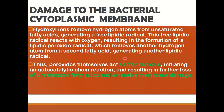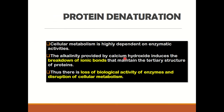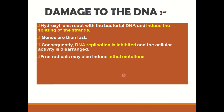Next is protein denaturation. The alkaline atmosphere provided by calcium hydroxide induces the breakdown of the ionic bonds that maintain the tertiary structure of the protein. Cellular metabolism is highly dependent on enzymatic activities, and because of this breakdown and damage to the rearrangement of the protein structure, there is loss of biological activity of enzymes and consequently disruption of cellular metabolism. Next, damage to DNA: hydroxyl ions react with bacterial DNA and cause splitting of the DNA strands. The genes are lost, DNA replication is inhibited, cellular activity is deranged, and free radicals may induce lethal mutations.